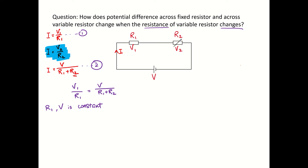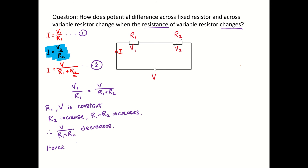Let's talk about the case when R2 increases. When R2 increases, R1 plus R2 increases. Therefore V over R1 plus R2 decreases. Hence V1 over R1 decreases. Since R1 is a constant, because R1 is a fixed resistor, V1 decreases.